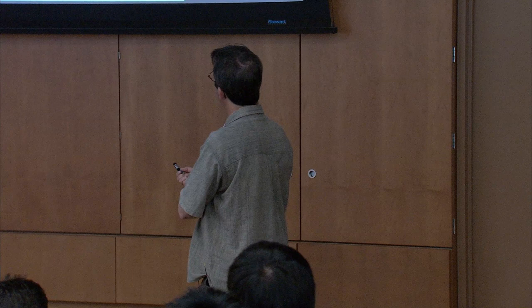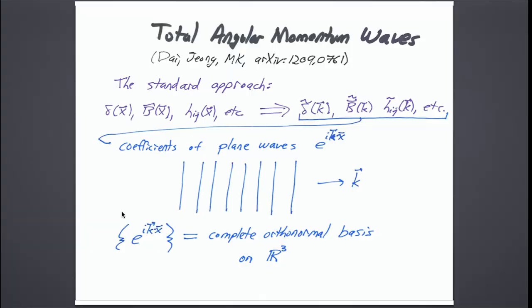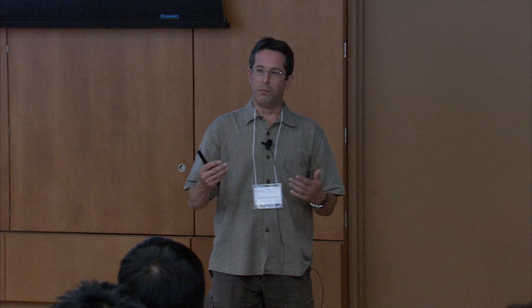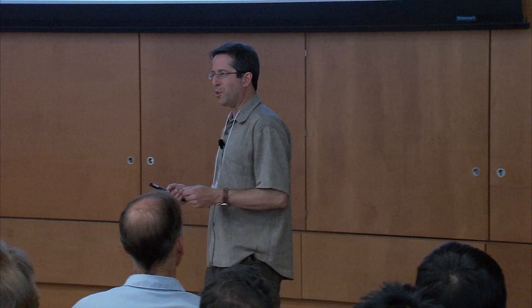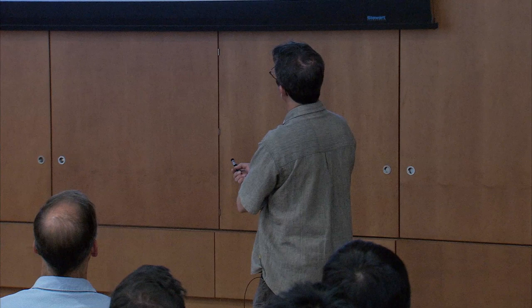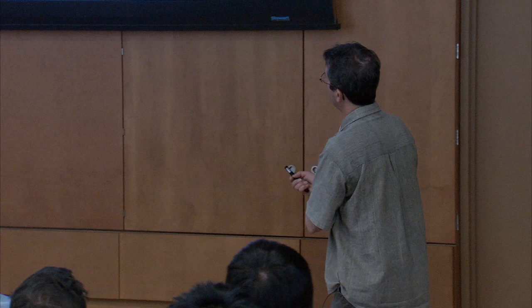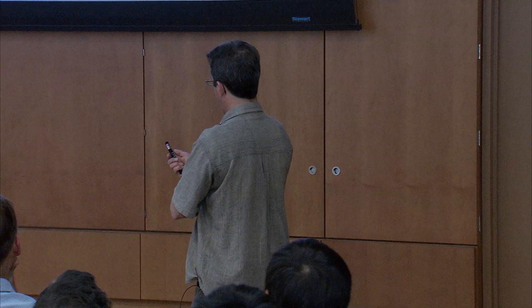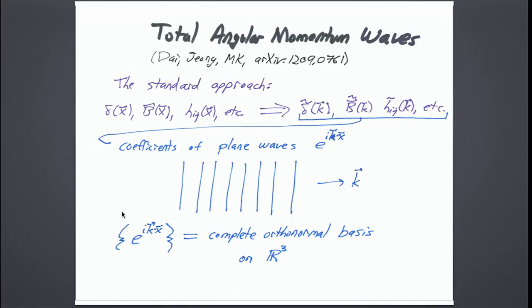This mechanism is based on a formalism for cosmological perturbations that we developed a few years ago, which we call total angular momentum waves. It's a long paper — about 30 pages, with a second paper also about 30 pages. It's essentially a set of mathematical tools for cosmological perturbation theory, especially for applications to observations on the sky. I'll give you a brief overview and then show you the parts relevant for B modes.